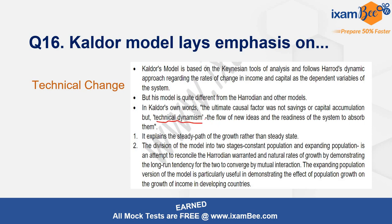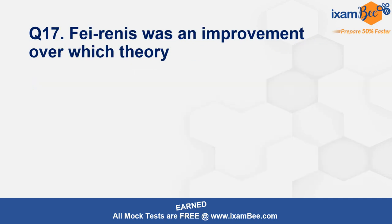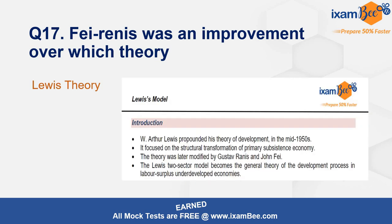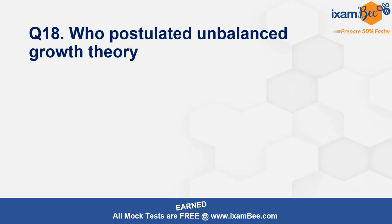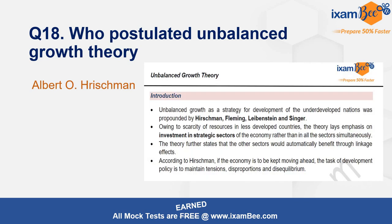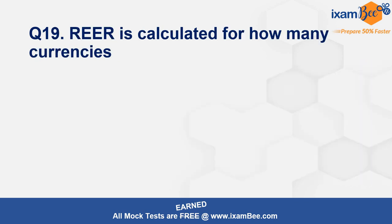The Kaldor model's emphasis is on technical change — the ultimate factor is technical dynamics. Then: Fei-Ranis was an important improvement over Lewis's theory, as Lewis had ignored how the subsistence sector would grow, which is a major drawback. Next, who postulated unbalanced growth theory — it was Albert Hirschman. And REER is now calculated for 40 currencies, revised from 36 in 2021.